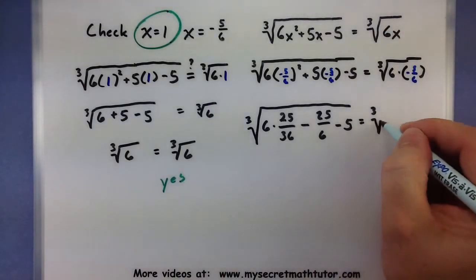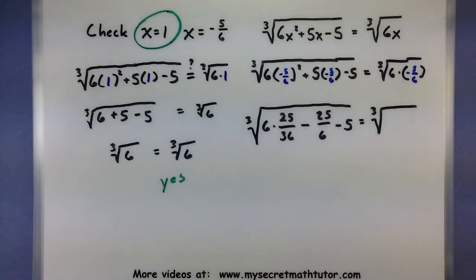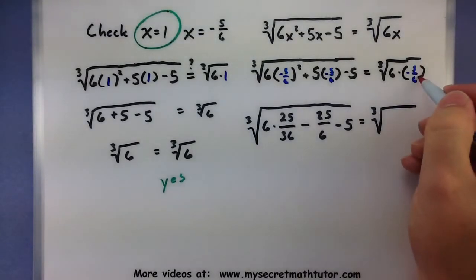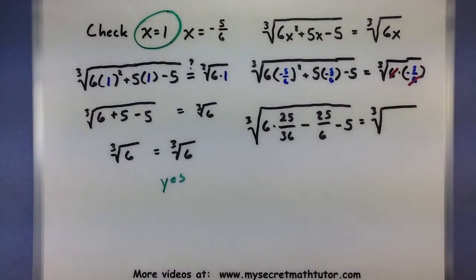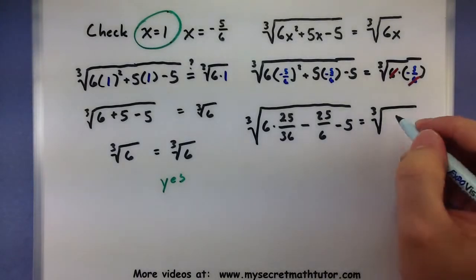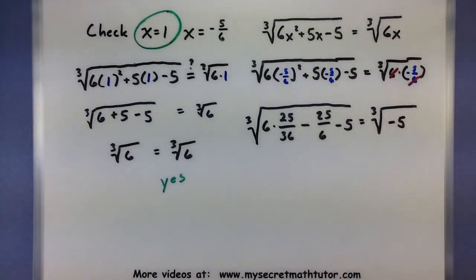Cubed root of, well this one's not so bad, notice how there's a 6 in the bottom. We'll cancel that out with the other 6. So we'll just say we have a negative 5 underneath there.